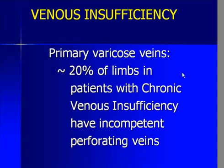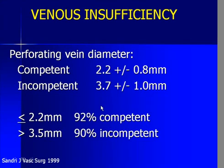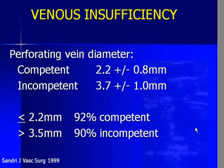It is interesting to note that a number of studies have shown that if you look at primary varicose veins in patients with chronic venous insufficiency, approximately 20% of the limbs in these patients do in fact have incompetent perforating veins. If you look at the lumen size, it can give you insight into whether or not the valve is going to be competent. Pretty much any perforating vein less than 2 millimeters in lumen diameter is going to be competent, and anything greater than 3.5 millimeters is probably going to be incompetent. Between 2 and 3.5 millimeters is the transition zone, but with color Doppler imaging these are large enough to readily identify and establish valvular competence with simple augmentation maneuvers of the calf.